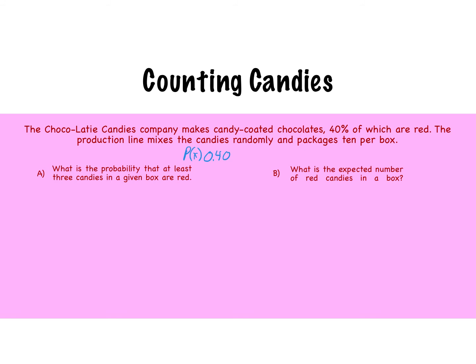So what is the probability that at least three candies in a given box are red? So at least three, which means we're trying to figure out the probability of three or more, and that would actually equal 1 minus the probability of less than three. So that's going to equal 1 minus the probability of 0 red, 1 red, and 2 red.